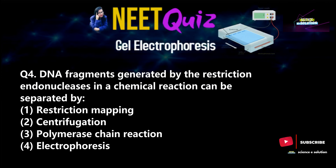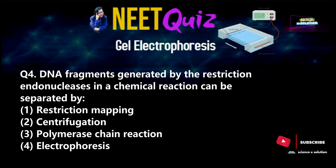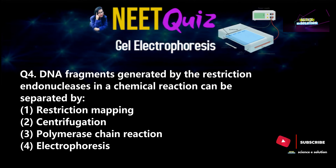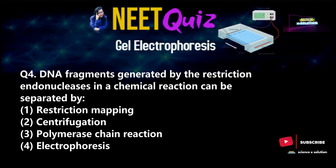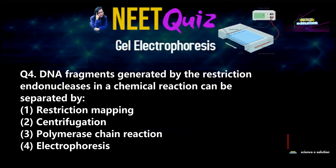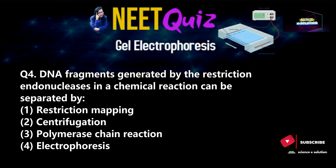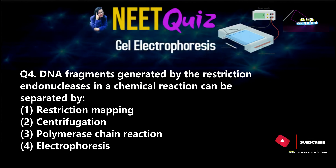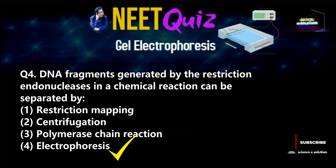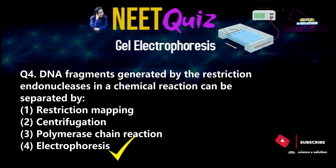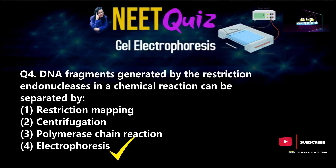The fourth question, which was asked in 2013: DNA fragments generated by restriction endonucleases in a chemical reaction can be separated by — Options: restriction mapping, centrifugation, polymerase chain reaction, or electrophoresis. Restriction endonuclease-generated fragments can be separated by the process of electrophoresis. Option four is correct.